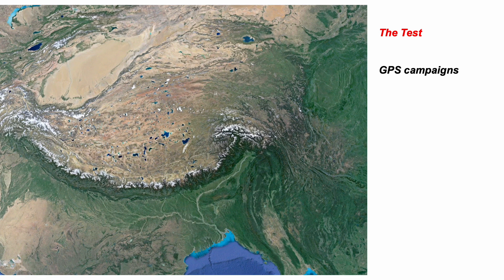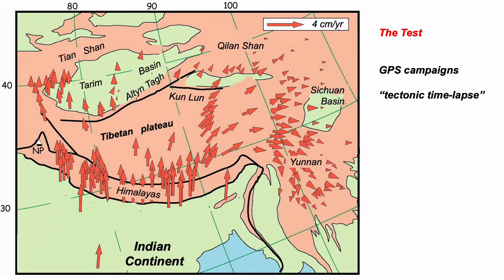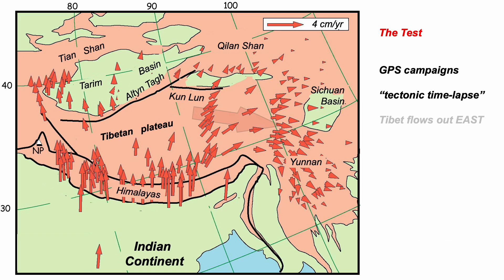Since Tapponnier's original idea, the study of active tectonics has advanced considerably by incorporating satellite information, especially GPS. Repeated surveys of apparently fixed locations reveal movement at centimetres a year. Leave a decade or more between GPS measurements and you have enough movement to be detected — it's like a tectonic time-lapse film. The length of the red arrows proportionally shows the relative movement of the crust of Tibet relative to stable Eurasia to the north. These GPS data confirm the idea that Tibet is squirting off to the side.